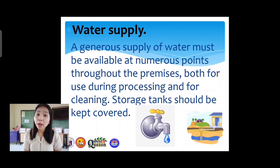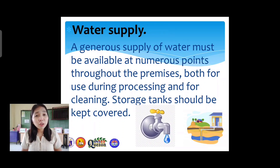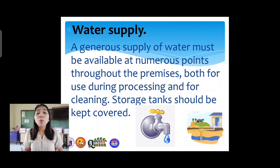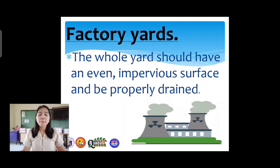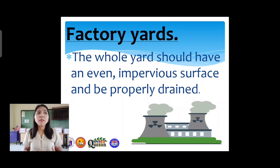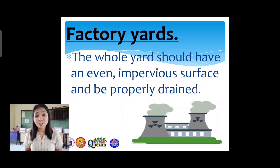Another part is water supply. Since we are dealing with fish, we should have a generous supply of water — both for processing the fish and for cleaning. A storage tank should be kept covered because it should be clean for proper hygiene and sanitation. Last is the factory yard: the whole vicinity of the factory should have an even, impervious surface, be properly drained, and must follow the standards set by the Department of Health and the Department of Trade and Industry.